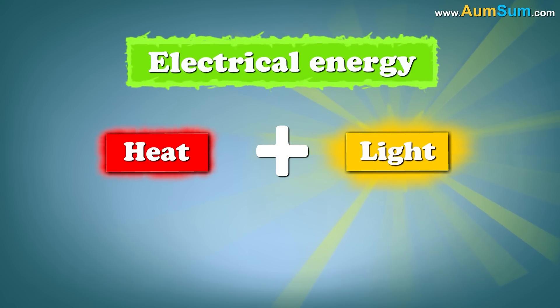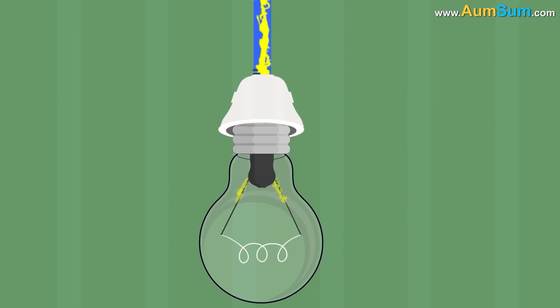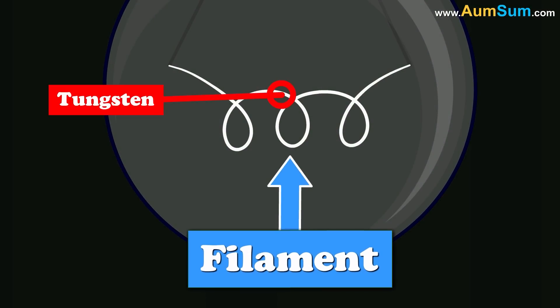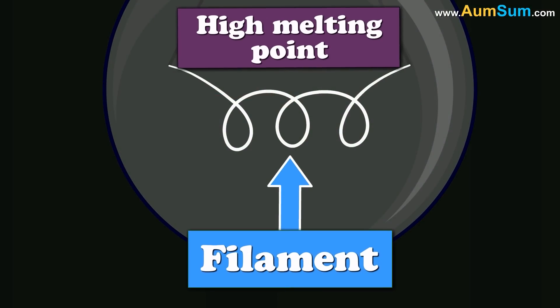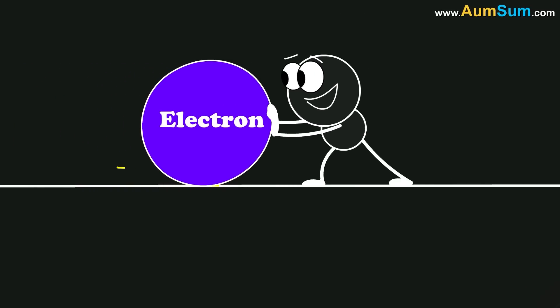Let us see how this happens. When we switch on the bulb, electricity starts flowing. This electricity or the flow of electrons is hindered by the filament of the bulb. The filament is usually made of tungsten as it has a high melting point. A long and thin filament wire offers higher resistance to the flow of electrons.